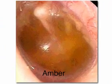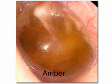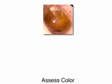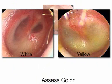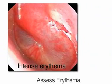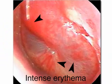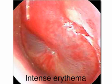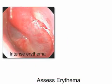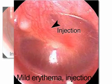Assess the color of the tympanic membrane. Although color alone is not diagnostic, an amber color usually indicates the presence of otitis media with effusion. White or yellow discoloration may be seen in both acute otitis media and otitis media with effusion. Look for areas of intense erythema on the tympanic membrane, a finding that indicates acute inflammation. When present together with opacification and bulging, this finding supports the diagnosis of acute otitis media. Mild erythema and injection of the tympanic membrane are nonspecific findings and often occur if the child is crying during the examination.